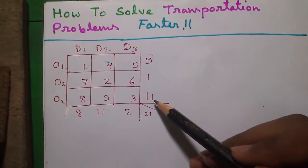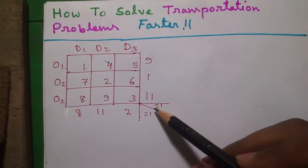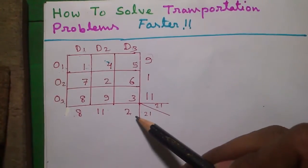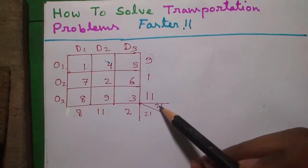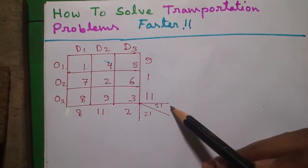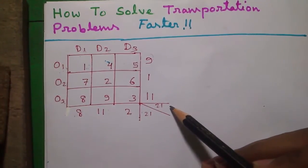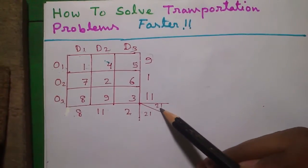Let's start the solution. First step we have to check whether sum of all the demands, in this case it's 21, equals to sum of all the supplies. If both are equal we can proceed. If it's not then it's an unbalanced transportation problem. How to solve it? Watch my other video for that. So since both the values are equal for this question, it's a balanced transportation problem and we can proceed.